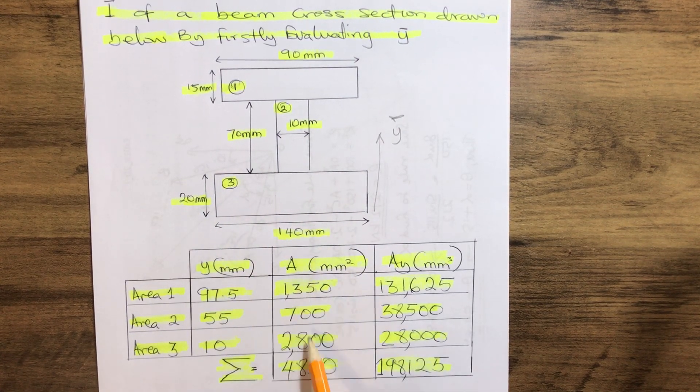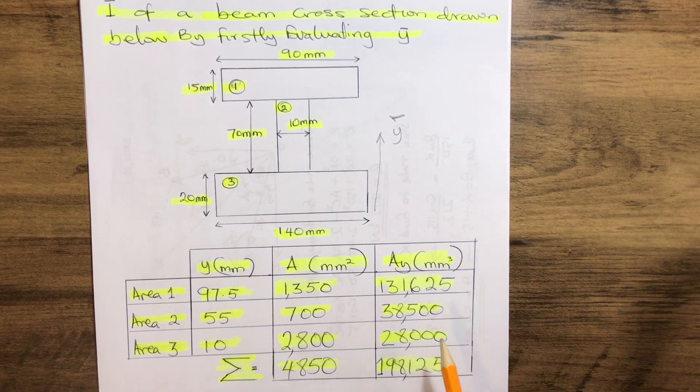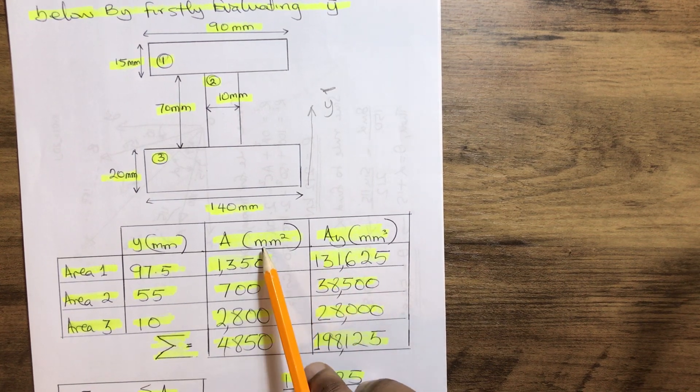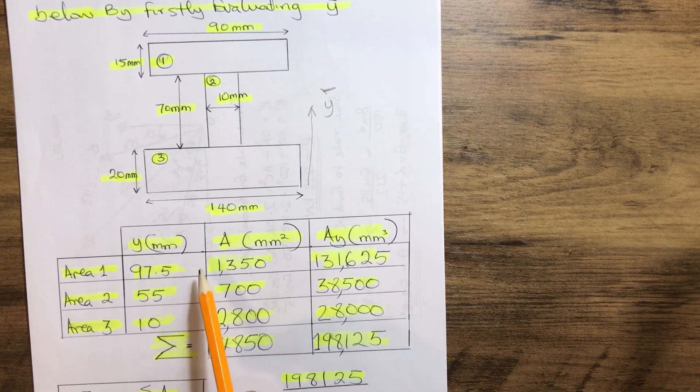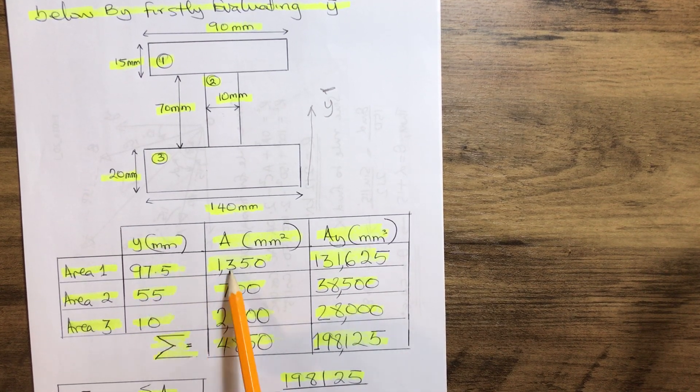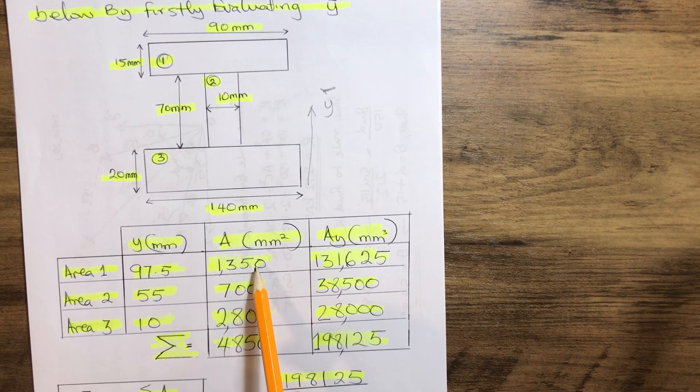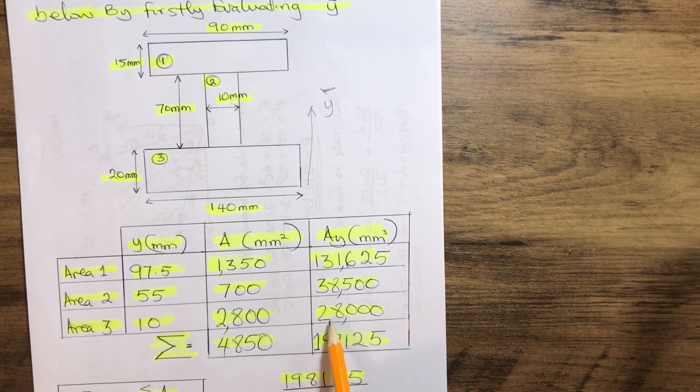The same thing: 20 multiplied by 140 gives us 2800. Now the next thing on the next column is how to calculate the product of A multiplied by Y. So we multiply our Y to each area of the section, that gives us 131,625, 38,500, and 28,000.